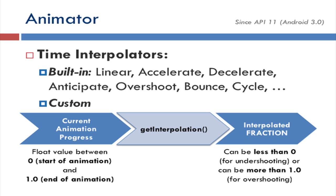The type evaluator internally returns our wanted value between the start and end values of the required type — for example, color or any other object. There are some built-in time interpolators in Android: linear, accelerate, decelerate, anticipate, overshoot, bounce, and cycle. For example, the accelerate time interpolator will speed up your animation during the beginning and then slow it down at the end. Decelerate does the opposite — it maintains a constant rate and speeds up at the end.